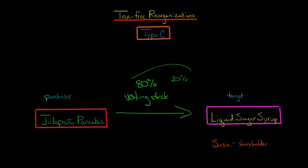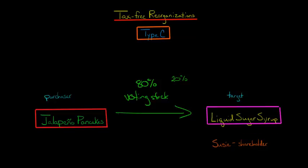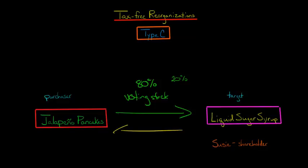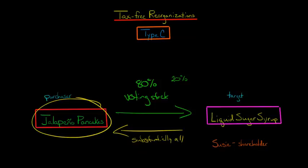So they're going to transfer this to the target — in this case, the target is Liquid Sugar Syrup. They're going to transfer the voting stock and some boot, or it could be 100% voting stock, to the target corporation. And what the target corporation is going to give back is substantially all of their assets to Jalapeno Pancakes. We're going to define what substantially all means in a moment.